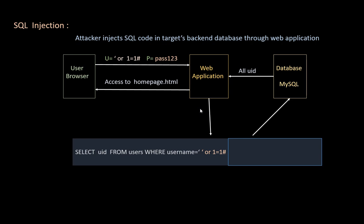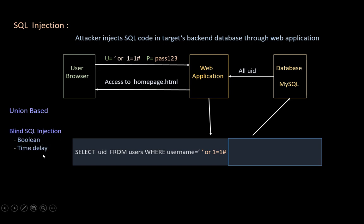There are other techniques like union-based SQL injection, where the attacker uses the UNION operator to append their own query to the original query to retrieve data from the database — like table names, column names, or data inside columns displayed on the web page. But some applications don't display output on the web page; in that case the attacker uses blind SQL injection. Under blind SQL injection, two techniques are used: Boolean-based and time-based. In Boolean-based, the attacker uses a logical condition — if correct, the page loads normally. In time-based, the attacker uses a sleep function — if the page takes time to load, the query is correct.